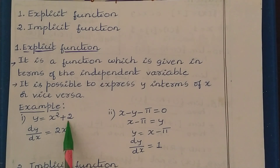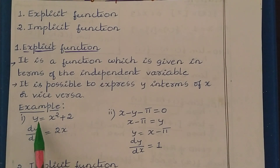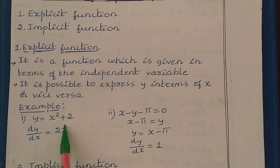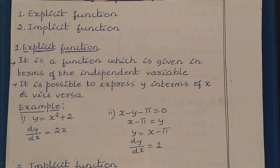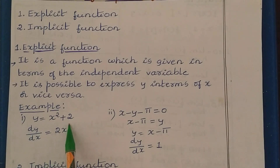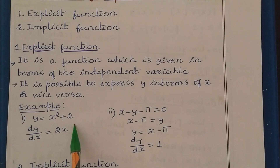You can observe here the variable y is on the left hand side and the variable x is on the right hand side. So here one variable is completely isolated. Such kind of function we call an explicit function, and the derivative of such a function we can easily find.